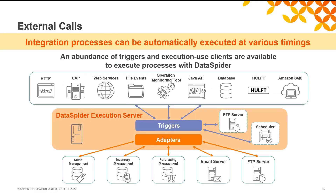You can control the execution time of the created integration process. This is called a trigger. You can flexibly set up the execution schedule, such as a specific time of every day, every 10 minutes, or only when the database is updated. It is also possible to set up an action from outside as a trigger — for example, setting up DataSpider to be launched when a specific URL is clicked, when a file is created, or when an operation monitoring tool such as JP1 is integrated with.